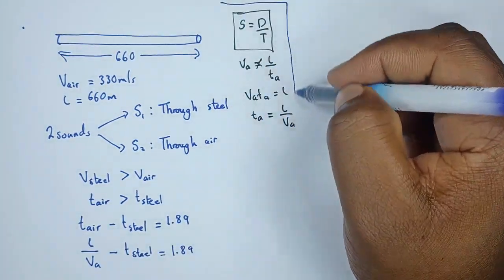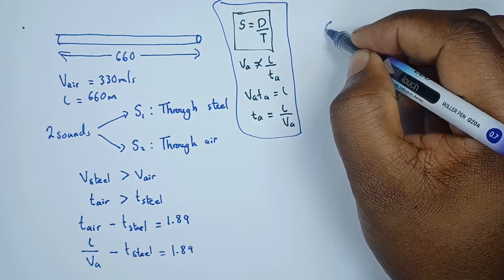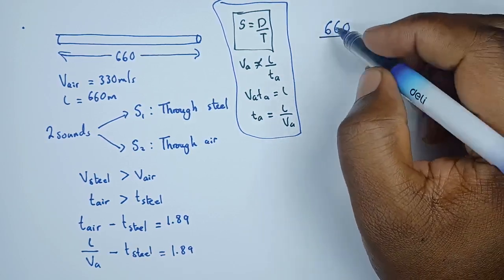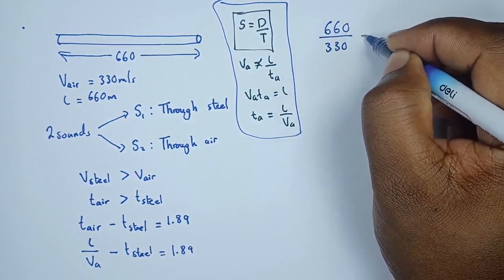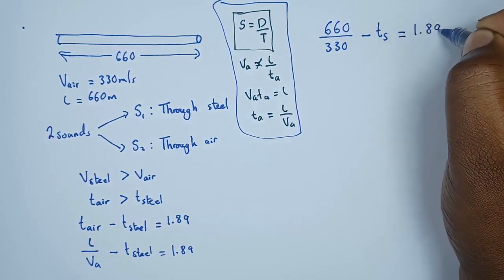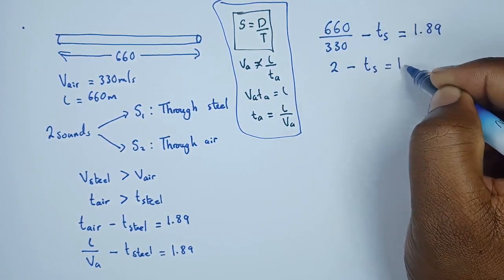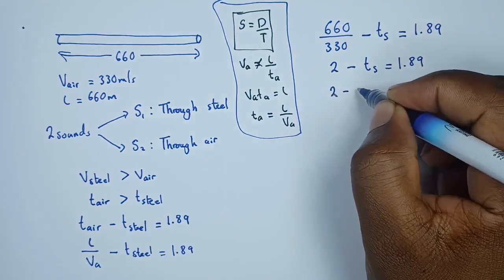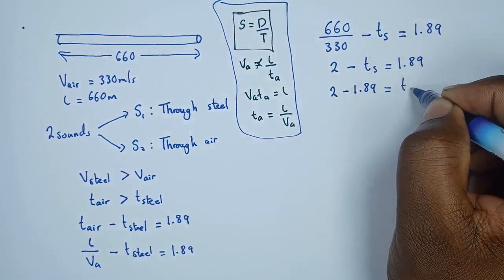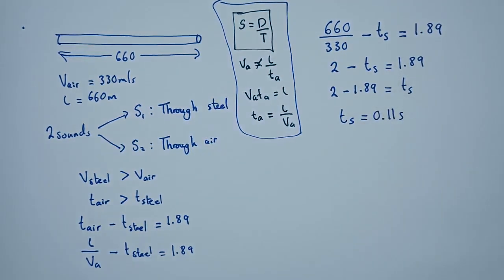So we can rearrange: 2 minus 1.89 equals T_steel. The value of T_steel is therefore 0.11 seconds. The time it takes sound to travel through the steel is 0.11 seconds. The reason we're interested in this is that we first need to find the velocity in the steel.